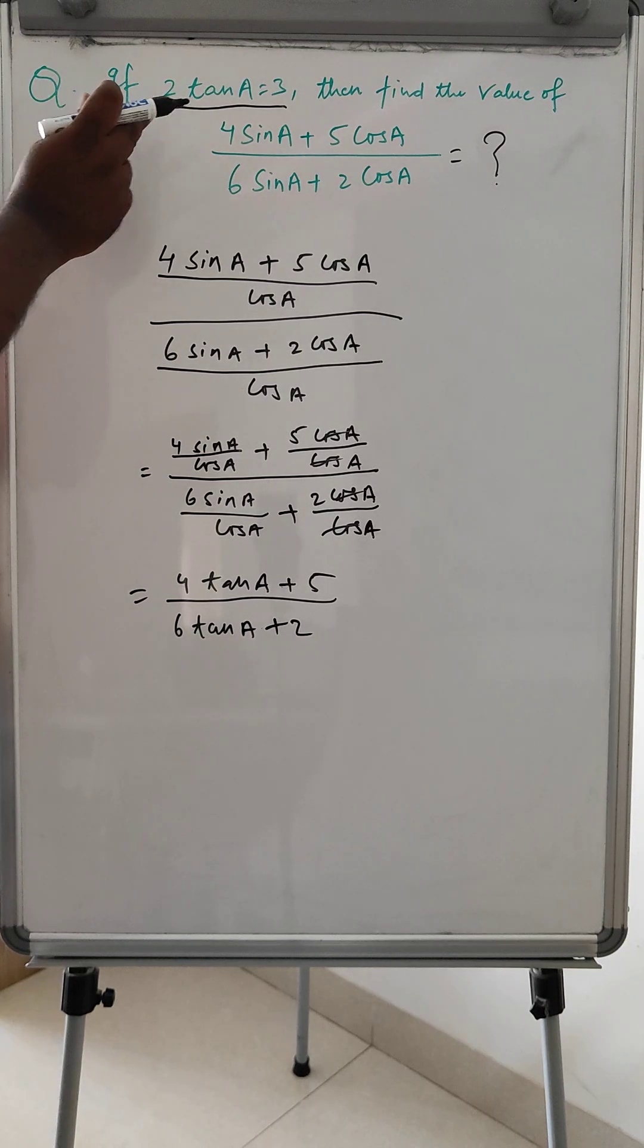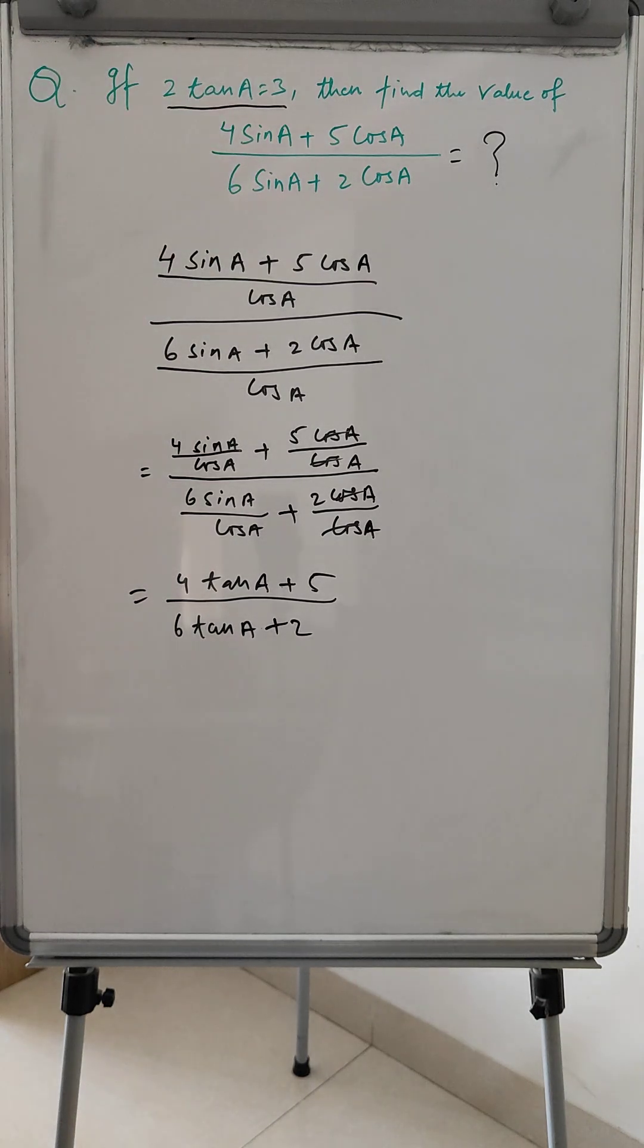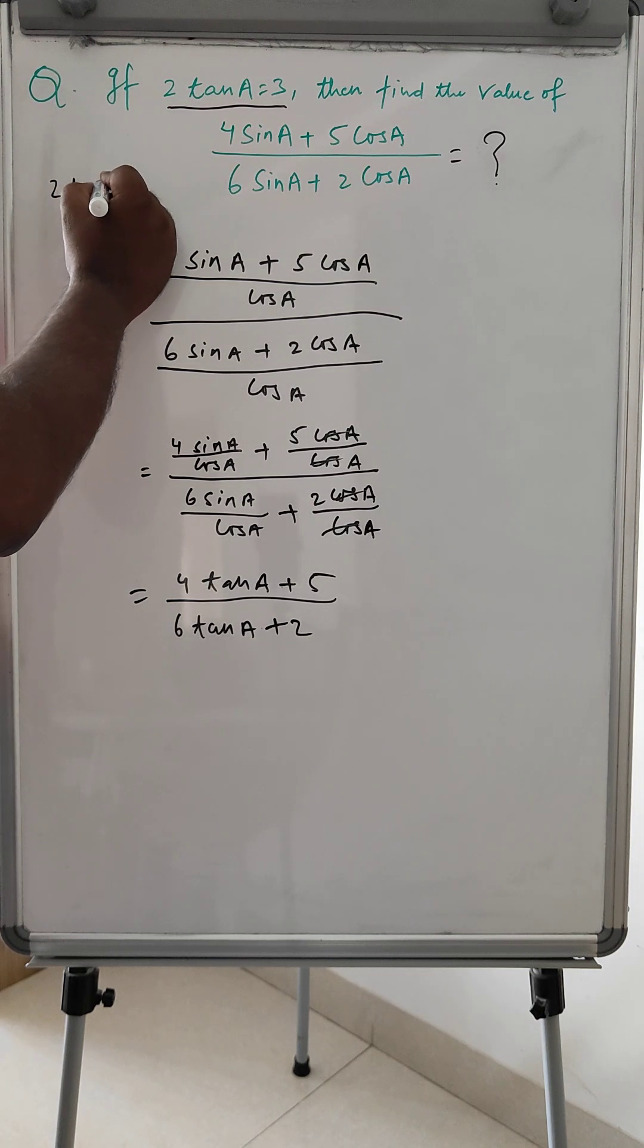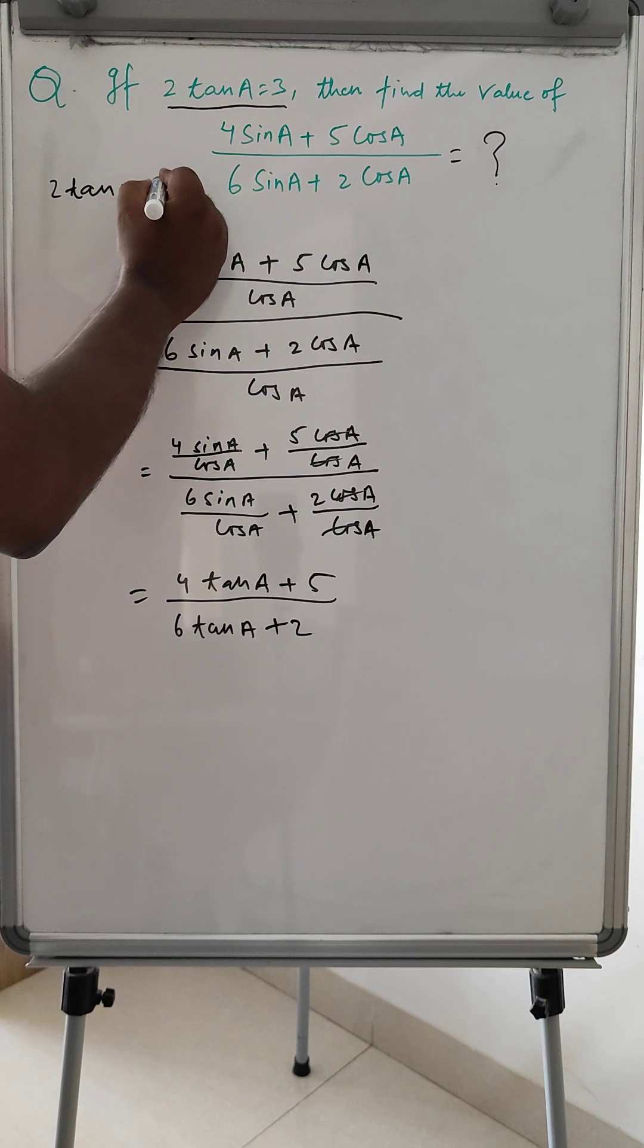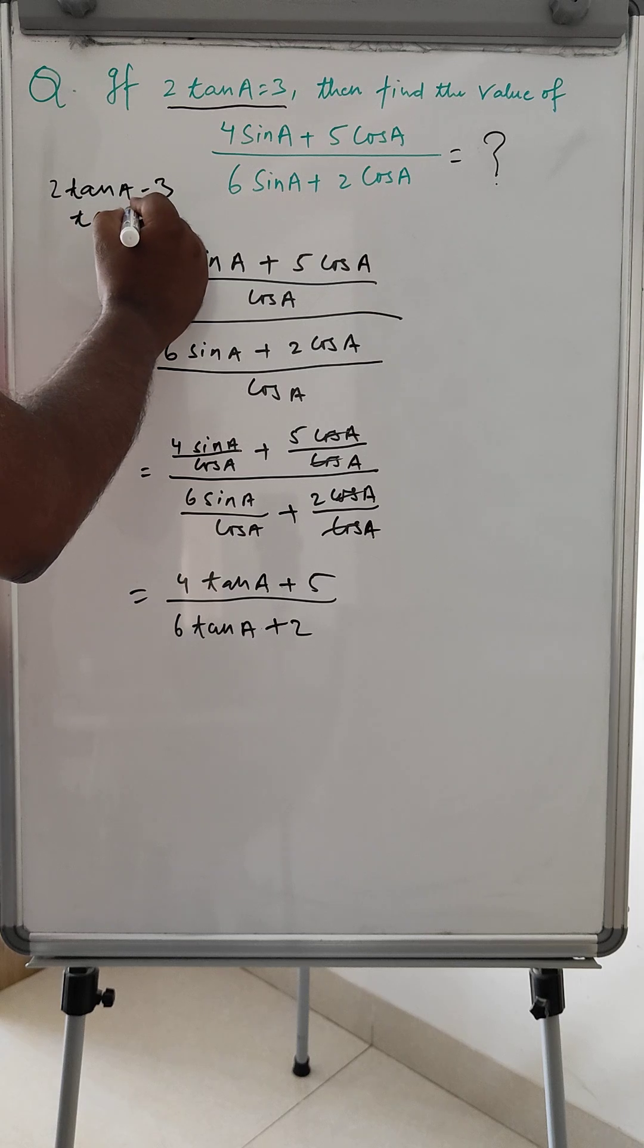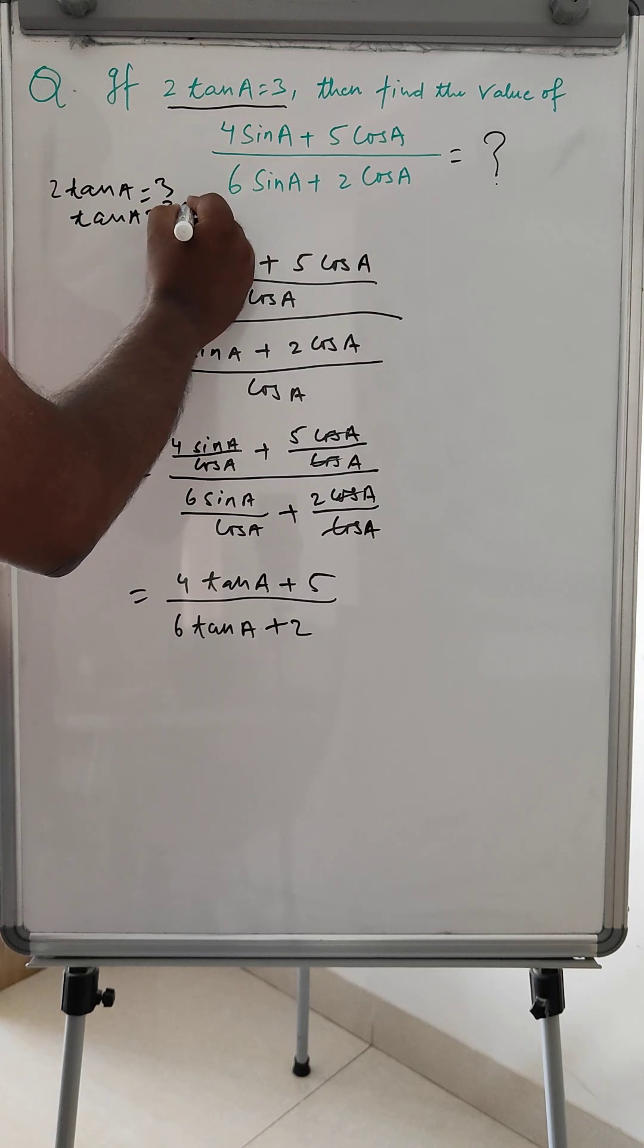So now we know that 2 tan A is equal to 3. So here we have 2 tan A is equal to 3, right? So tan A is equal to 3 by 2.